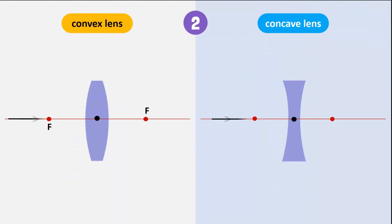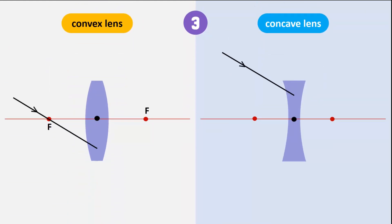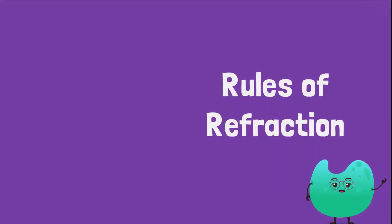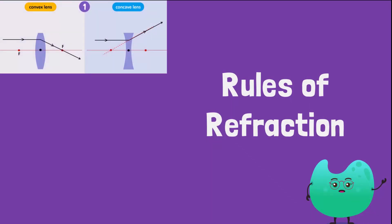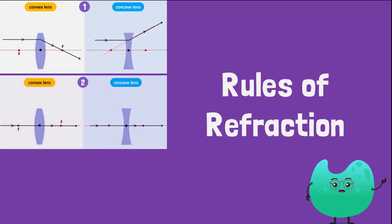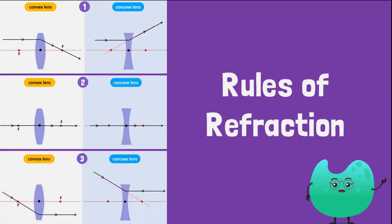When a ray of light passes through the optical center of the convex or concave lens, it does not refract after passing through it. When a ray of light passes through the principal focus, after going through the lens, it refracts and becomes parallel to the principal axis. These ray diagrams summarize the rules of refraction for three basic scenarios: when the incident ray is parallel to the principal axis, when it passes through the optical center, and when it passes through the focal point.